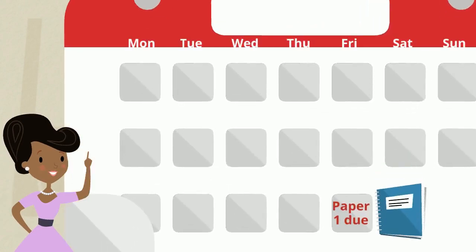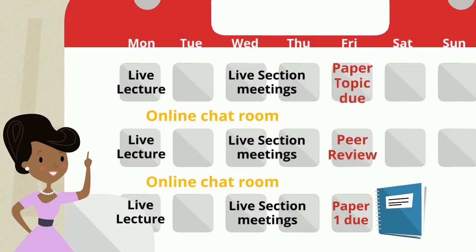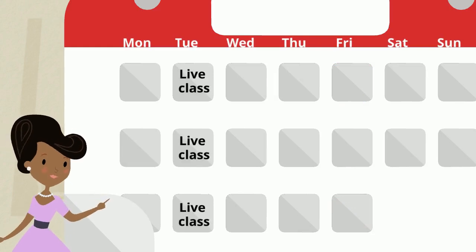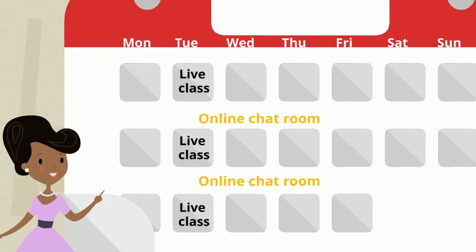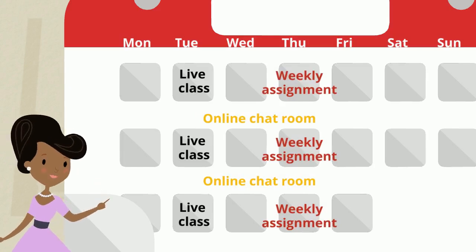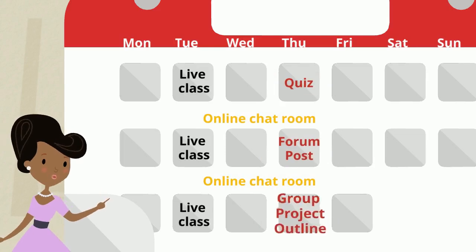Line those up with the live interactions, the asynchronous interactions, and the formative assessments. Generally, the live interactions will happen on the same day of the week every week, with asynchronous activities on the other days. And depending on the learning objectives, some classes will use the same formative assessment every week, but others will mix it up.